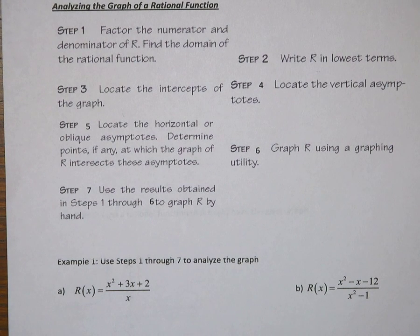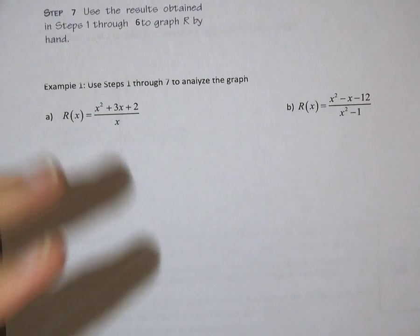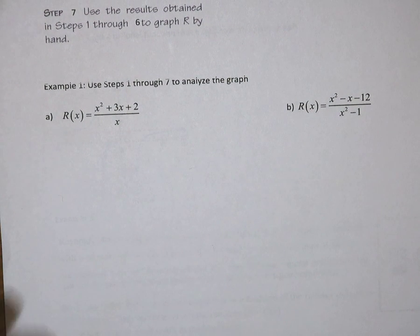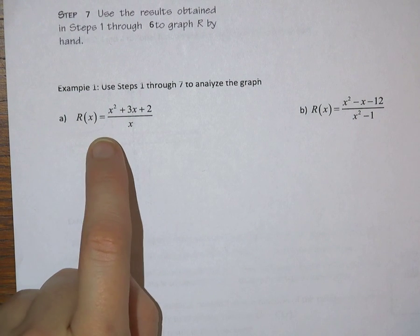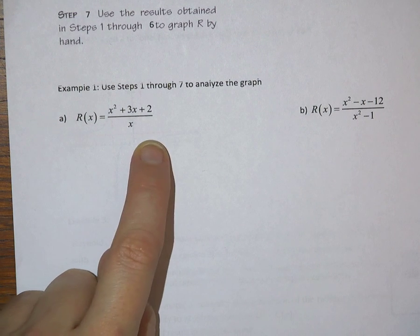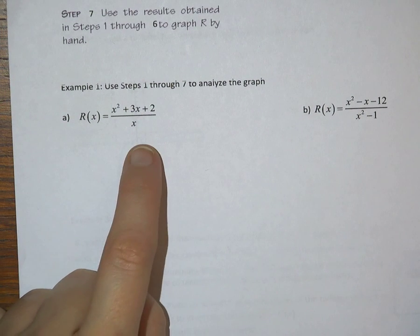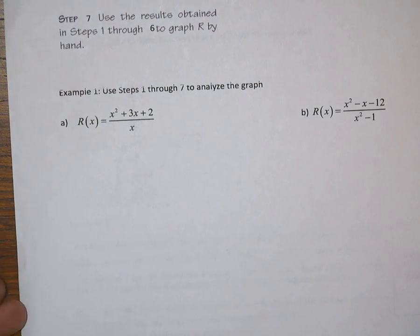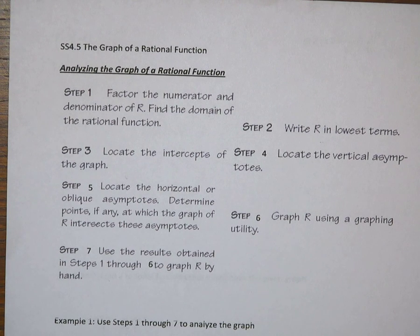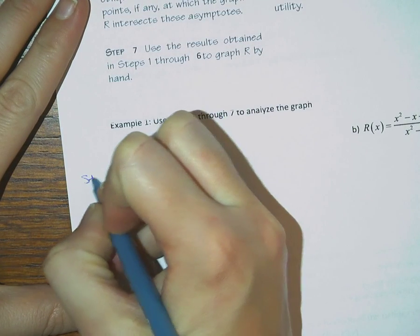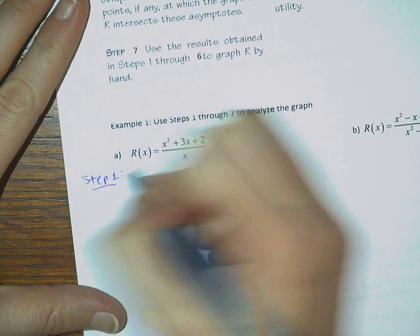These steps don't mean much until we apply them, so let's move on to example 1, where we are actually going to apply these steps. For part a, our rational function is x squared plus 3x plus 2, all divided by x. Let's dig in with those steps. Looking back at step 1, we need to factor the numerator and the denominator of the rational function. So step 1: we want to factor.